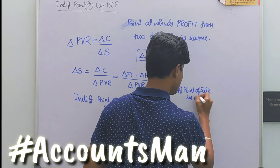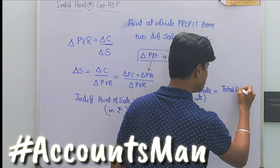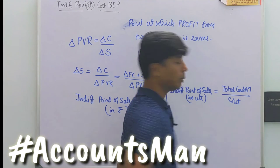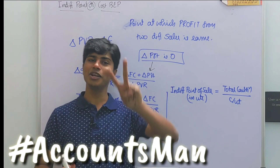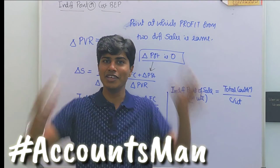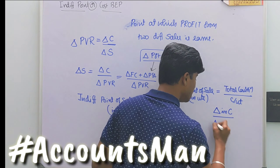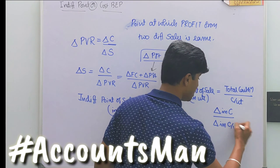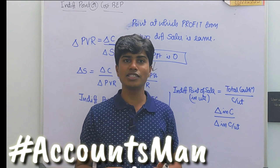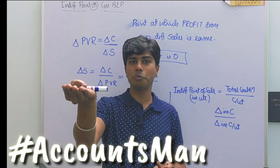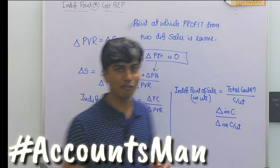To find the indifference point of sale in units, we go back to the formula: total contribution divided by contribution per unit. But here we are talking about two sales giving the same profit, so instead of contribution, we use change in contribution divided by change in contribution per unit. Change in contribution means the difference between fixed cost plus profit at each level, but since profit is the same, the difference is only in fixed cost.